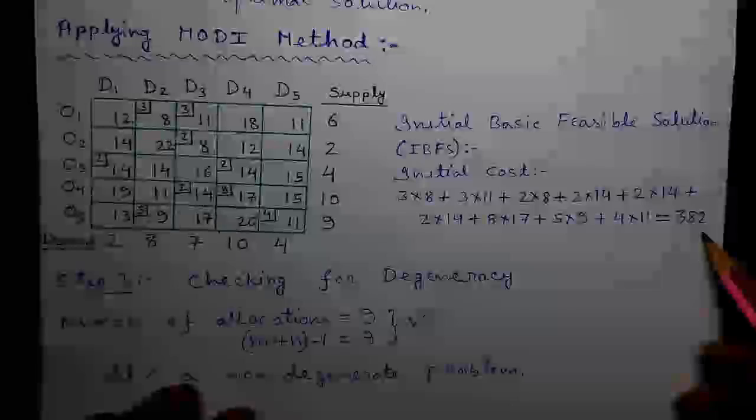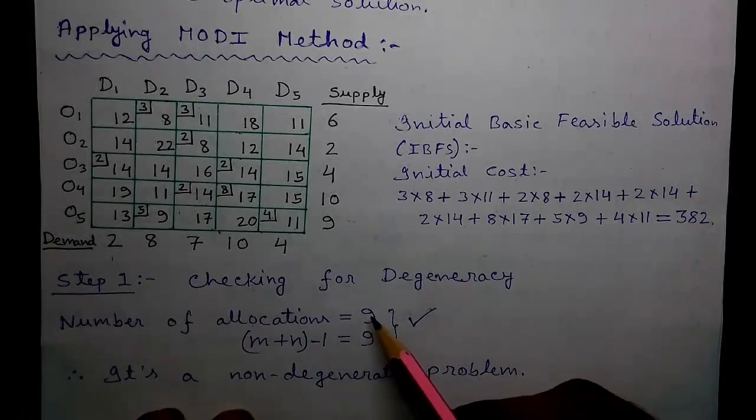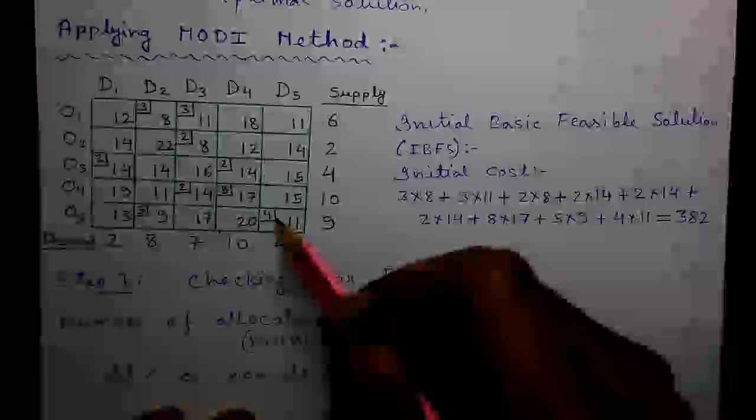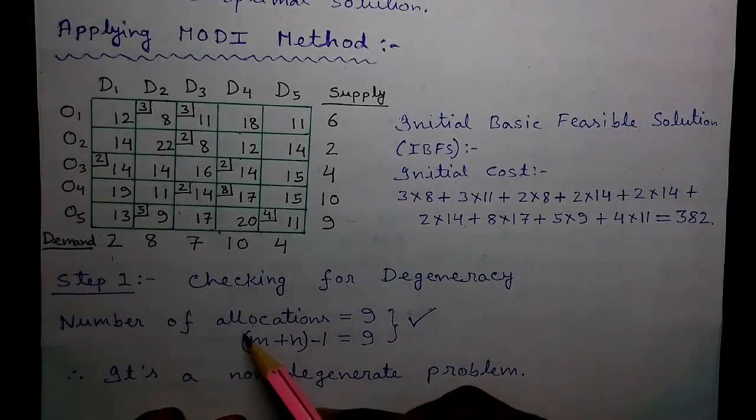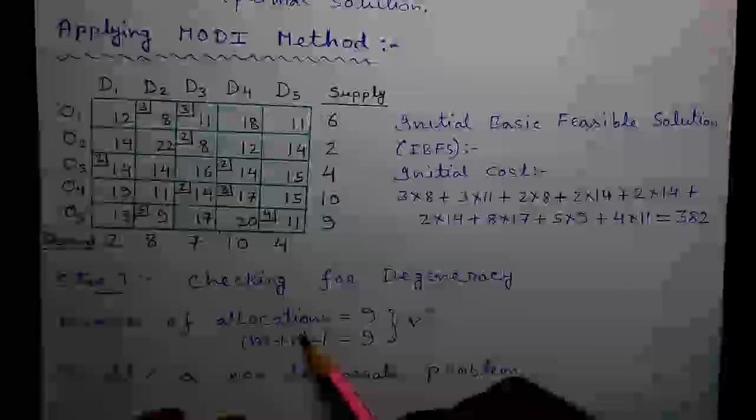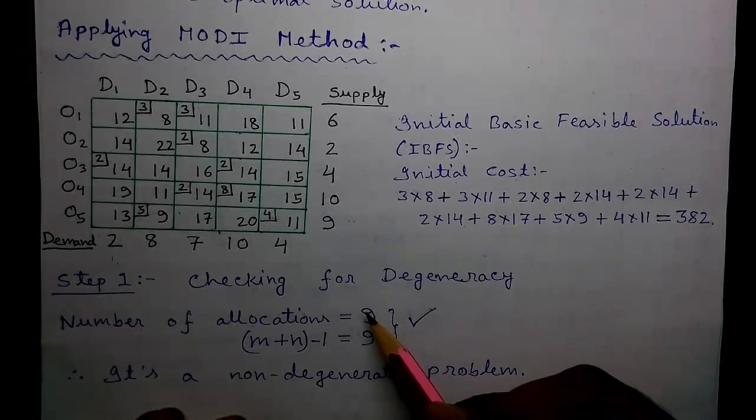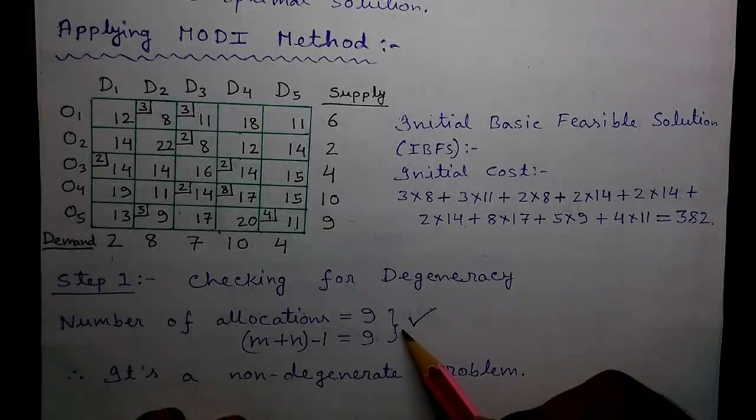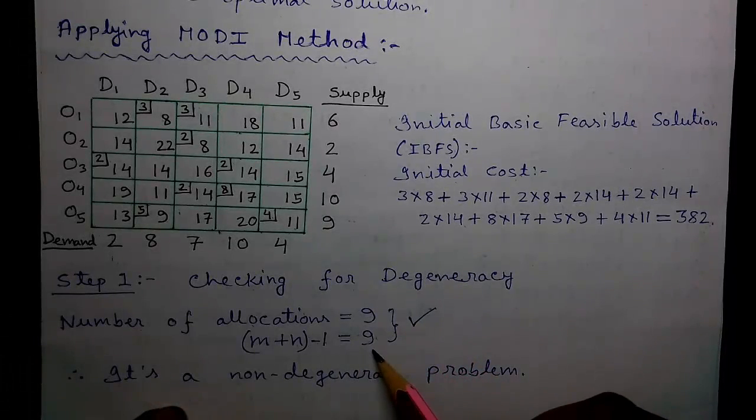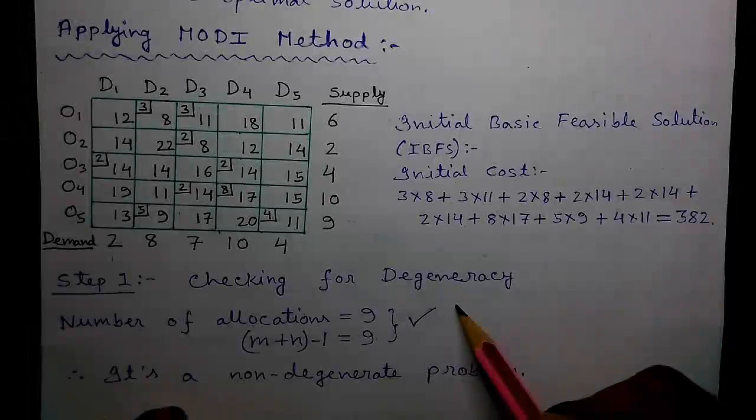So we will do the MODI method in 3 steps. Step number 1, checking for degeneracy. So our number of allocations is 9: 1, 2, 3, 4, 5, 6, 7, 8, and 9. Total 9 allocations are there. Equals to M plus N minus 1, where M is the number of rows which is 5, plus N is number of columns which is also 5, minus 1. So 5 plus 5 is 10, minus 1 is 9. So since in our case, the number of allocations is equal to M plus N minus 1, it is a non-degenerate problem. If the number of allocations is not equal to M plus N minus 1, the problem is called a degenerate problem.